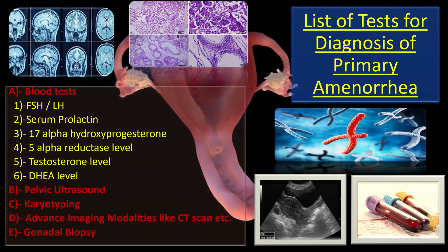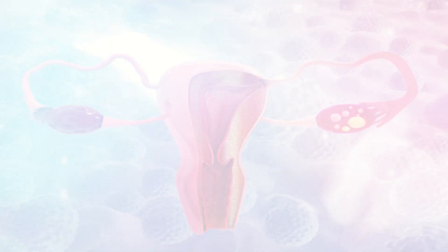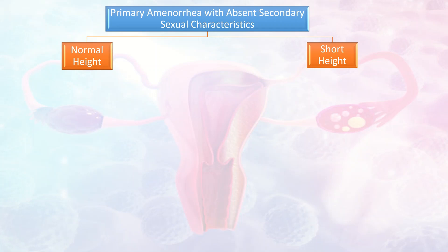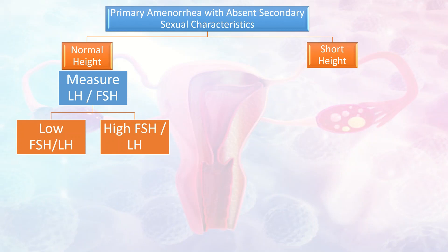Now I will tell you which tests are needed in the evaluation of a primary amenorrhea case. If a patient comes with primary amenorrhea with absent secondary sexual characteristics, we have two groups: those with normal height and those with short height. In the group with normal height, we check FSH and LH levels — the patient may have low or high FSH and LH levels.